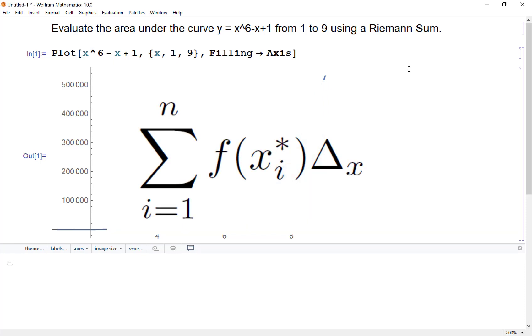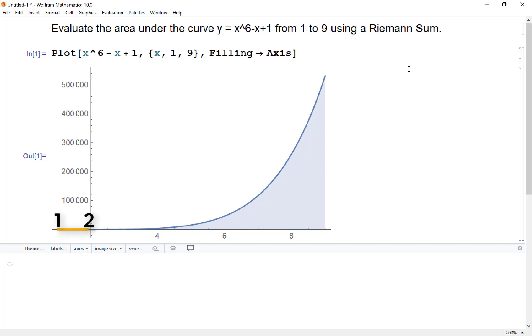We have sigma i going from one to n. That tells me I'm starting with the first rectangle, ending with the nth rectangle, and I'm adding them up. That's what capital sigma is. Then we have f of xi star, that gives me the height of each rectangle, delta x, which is the width of each rectangle. And the xi star is some sort of chosen representative from each little subinterval. For example, if I divide this into nine intervals, then the first interval would go from one to two. I need to find an xi star somewhere between one and two to find the height of the first rectangle.